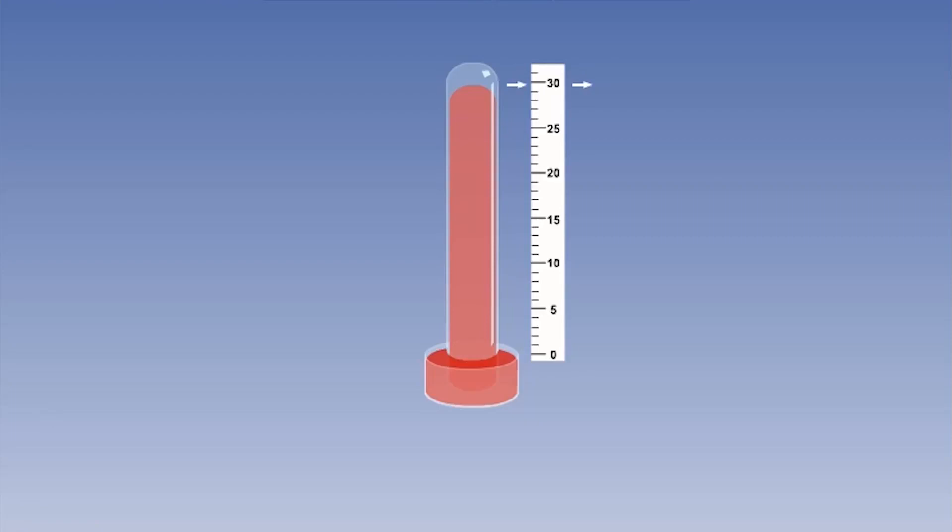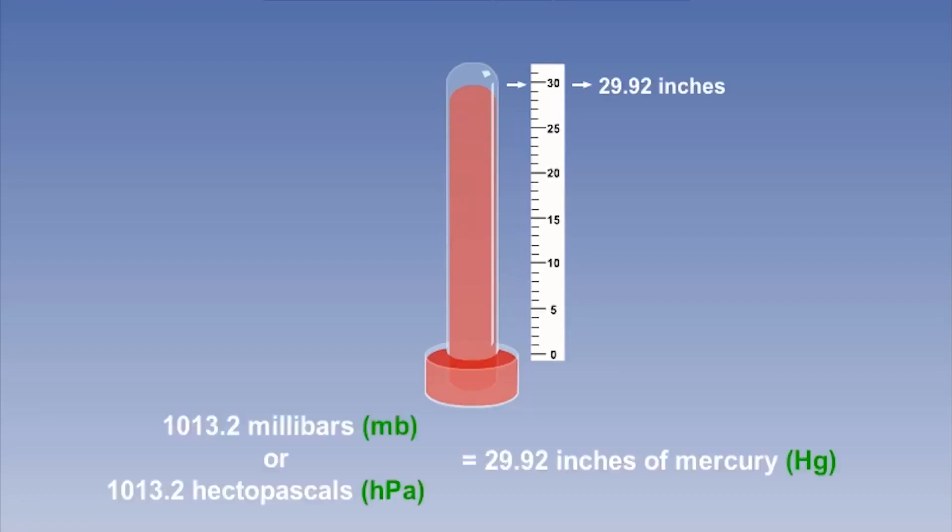However, elsewhere, it is more common to use the millibar, or hectopascal, to measure atmospheric pressure. This uses a different scale, but for comparison, 1013.2 hectopascals is equivalent to 29.92 inches of mercury.